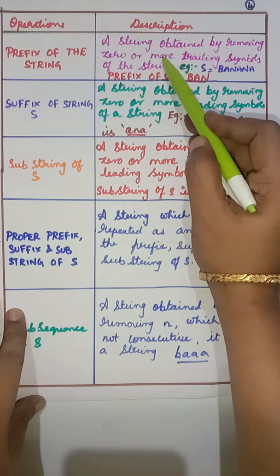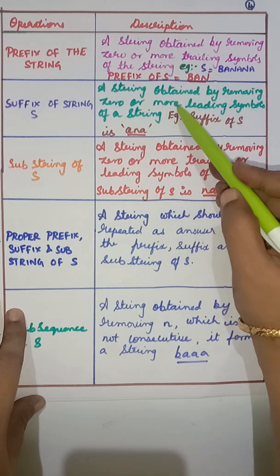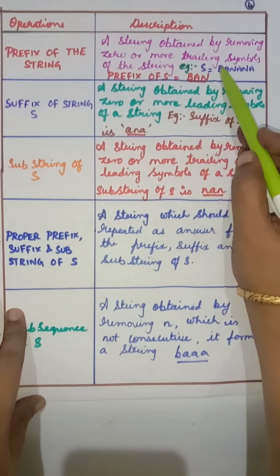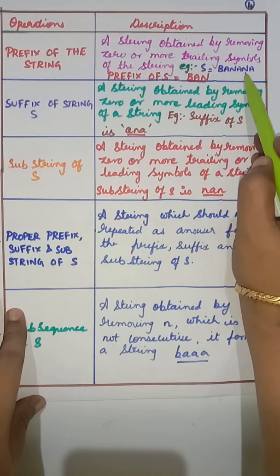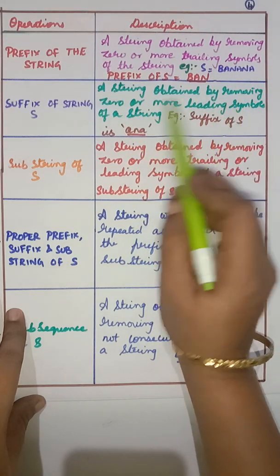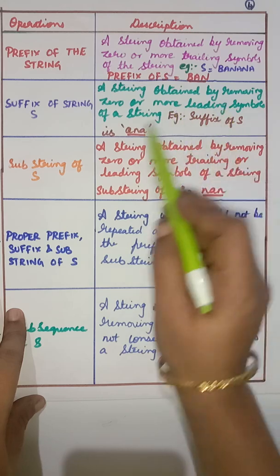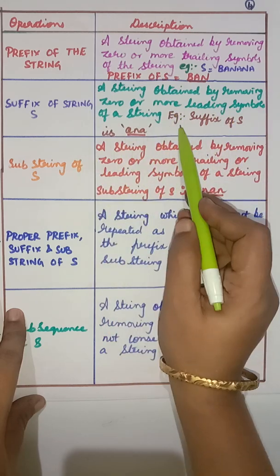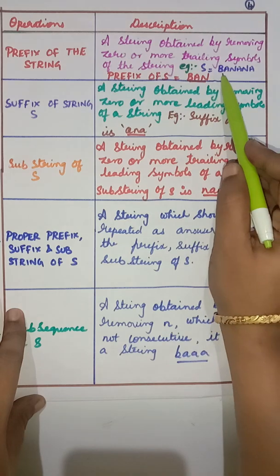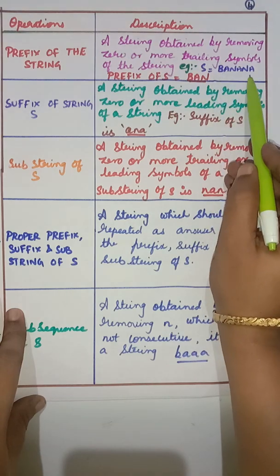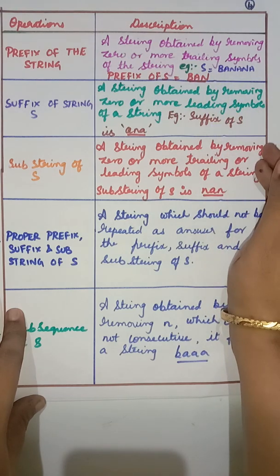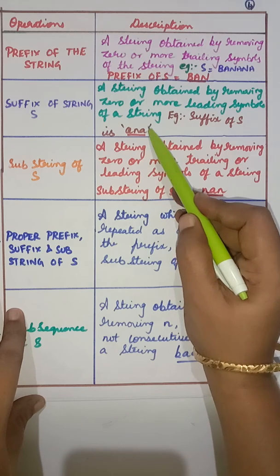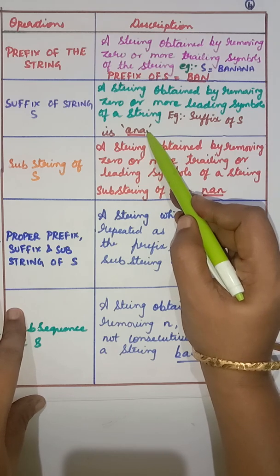Suffix of s is similar to prefix, but instead of removing trailing symbols, we remove leading symbols. A string is obtained by removing zero or more leading symbols. For example, consider 'banana' — removing the leading symbols gives us 'ana'. This is the suffix of the string 'banana'.